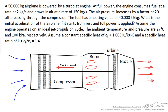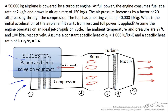In a turbojet engine there are effectively five points: the inlet to the compressor, the exhaust or exit of the compressor which enters the burner section, the exit of the burner which enters the turbine, the exit of the turbine which enters the nozzle, and finally point 5, the exit of the nozzle.